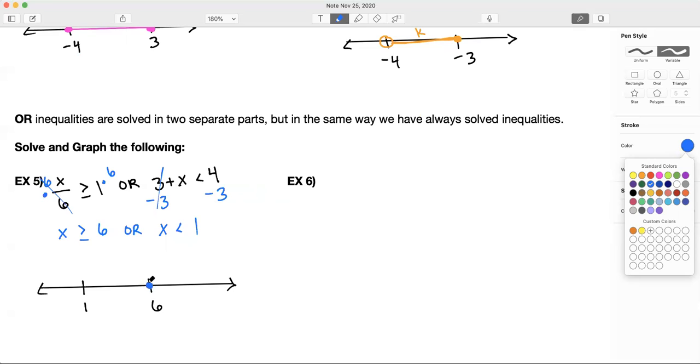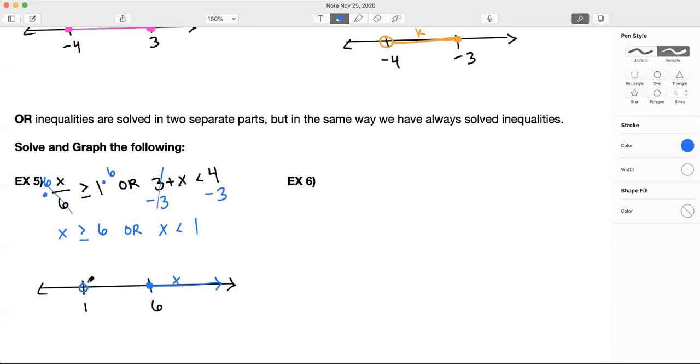Closed circle. And then x is greater than or equal to that, so that means x is going that way. And then x is also, or x is less than one. So here's one, and open or closed circle? Open, right, because we don't have the equal to. And x is less than one, not including one. So there we go. And we have an or graph.